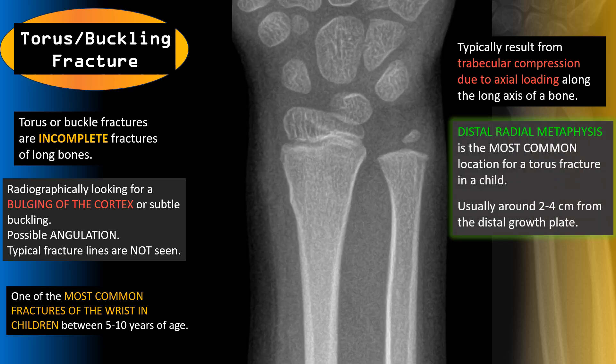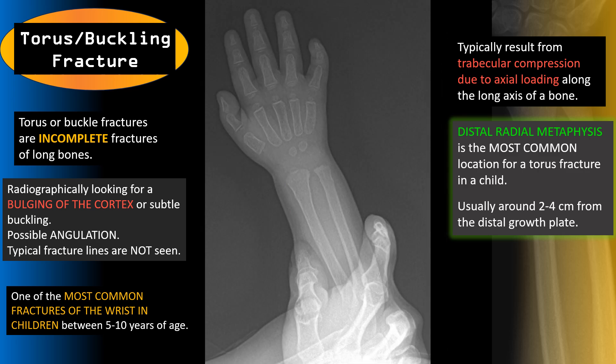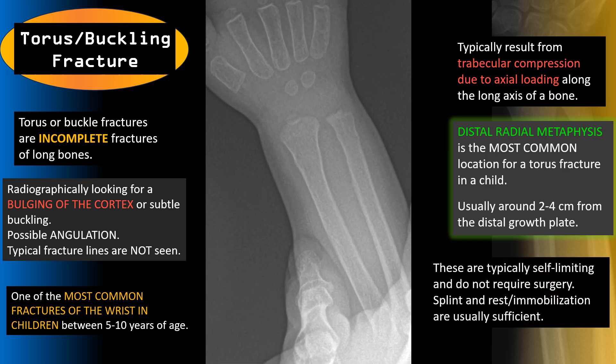These injuries result from trabecular compression due to axial loading along the long axis of the bone. The distal radial metaphysis is the most common location, usually around two to four centimeters from the distal growth plate. Here we can see a small torus or buckling fracture at the medial aspect of the distal radius. These types of fractures are usually self-limiting and do not require surgery — splint, rest, and immobilization are usually sufficient.